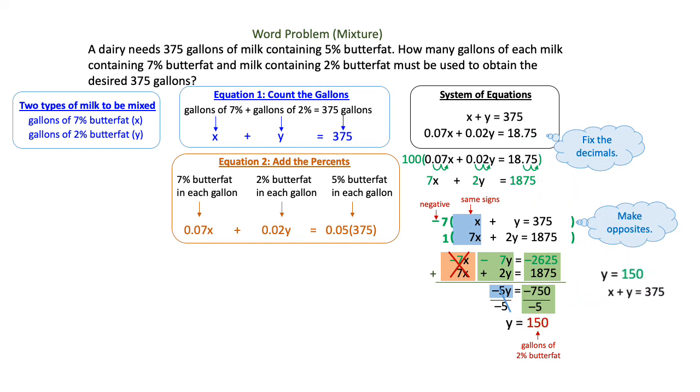I can take the 150 and plug it into the first equation and I can find how many gallons of 7% that we need. So go ahead and take the 150 and plug it into the first equation. And then you'll be subtracting the 150 from both sides of the equation. That eliminates the 150s. And when you subtract 375 minus 150, you get x is equal to 225. And that's the number of gallons of 7% butterfat.